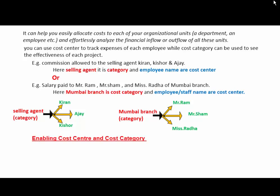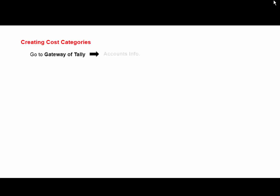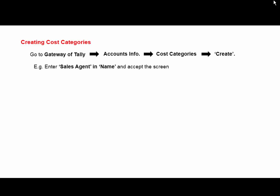To enable the cost center and cost category, press F11 for company features, go to accounting features and set 'Maintain cost centers' to Yes, and 'More than one payroll/cost category' also to Yes. For creating cost category, go to Gateway of Tally, Accounts Info, Cost Category, and then Create. For example, enter the category name as 'Sales Agent' and accept the screen.